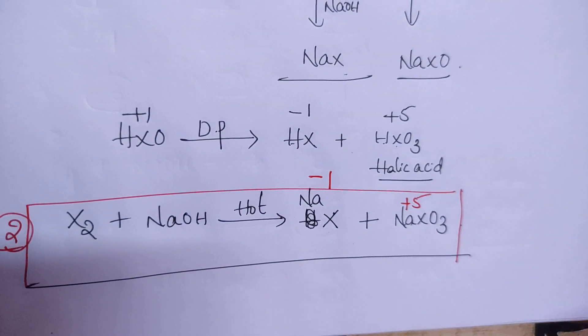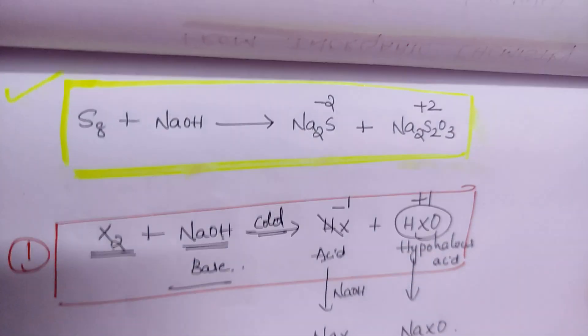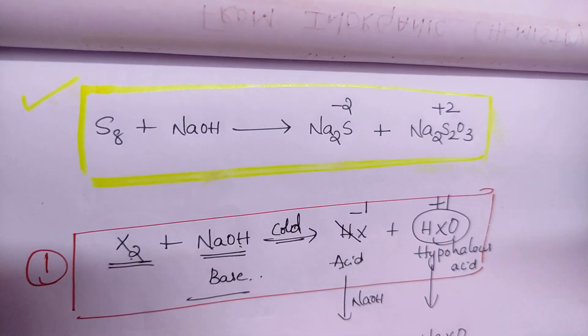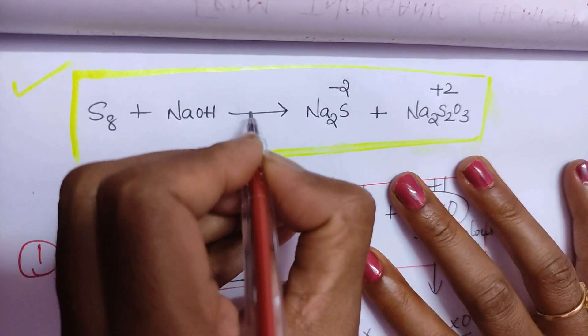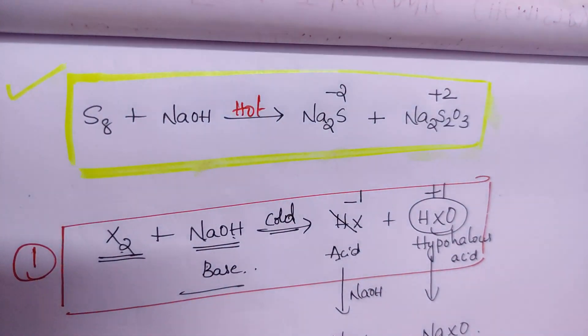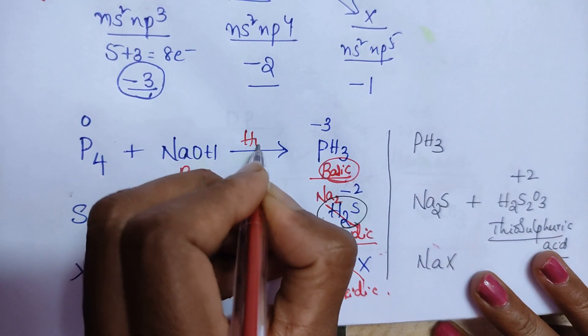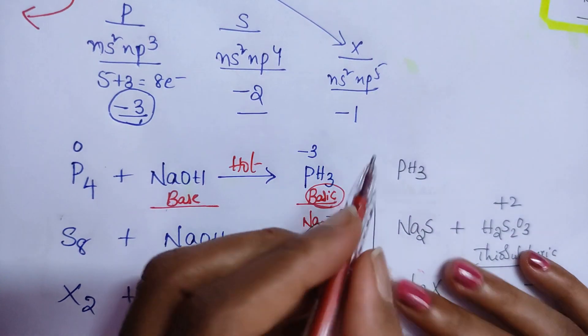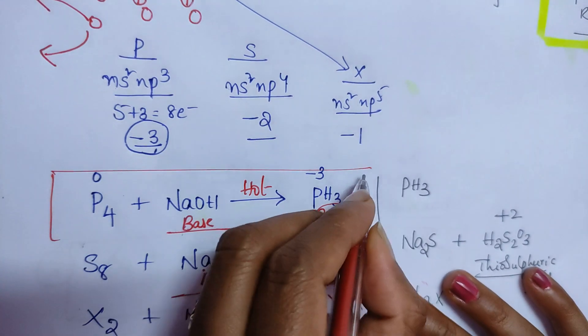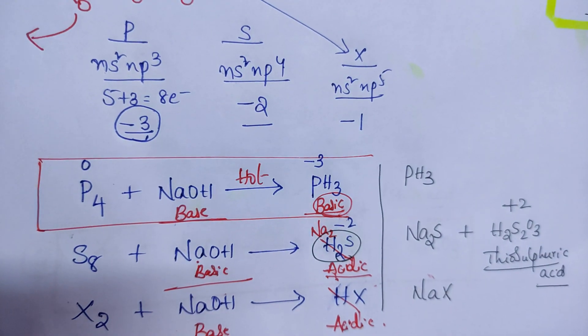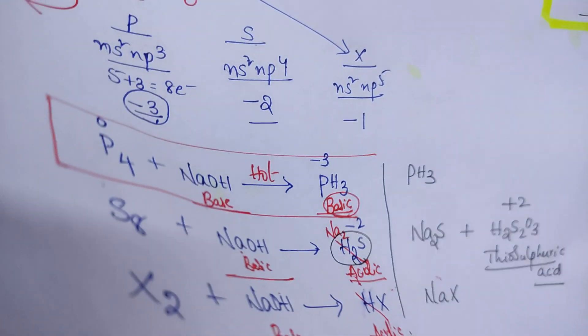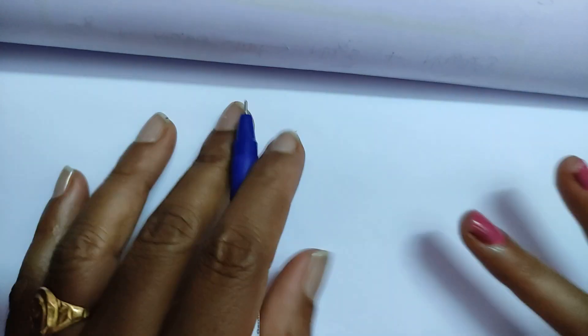Sulfur and phosphorus cannot react under cold conditions — they always require hot conditions. Now let's discuss phosphorus, which is an exceptional case that frequently appears in examinations. P4 is in zero oxidation state; when it reacts with NaOH, disproportionation takes place giving two products.